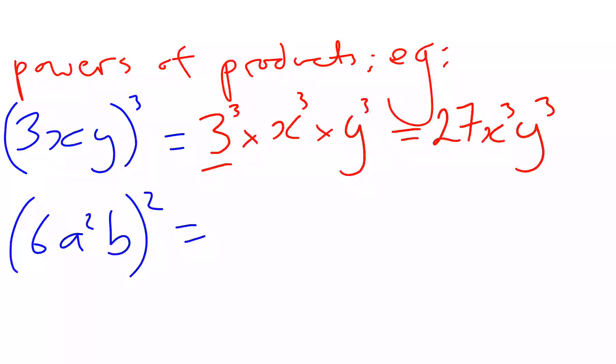A little harder one now. Inside the brackets, 6a squared b, all squared. So we're squaring all of that. Now one of these already has a power, so we remember our rule when there's a power in the brackets, 6 raised to a power outside the brackets, we multiply our powers.